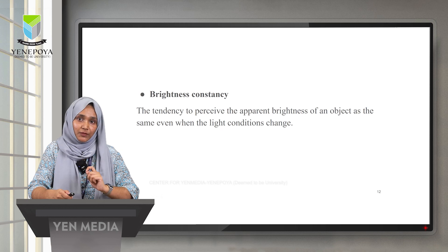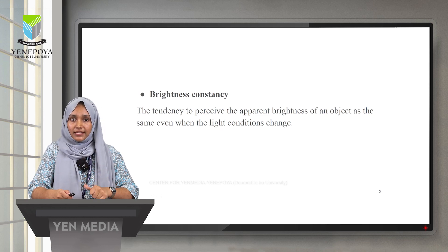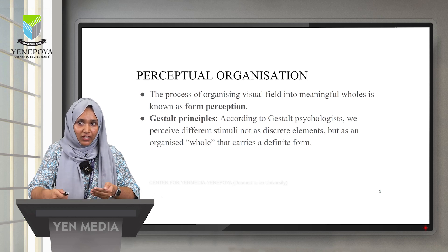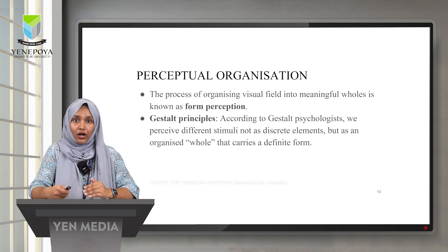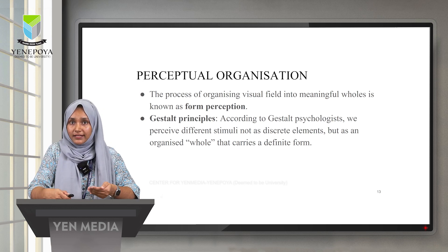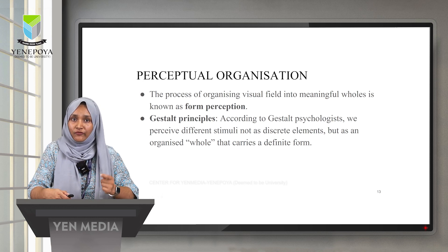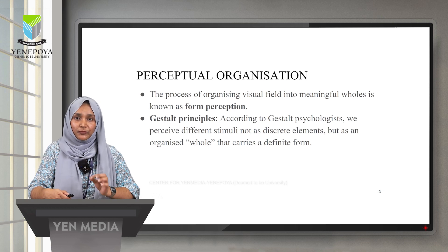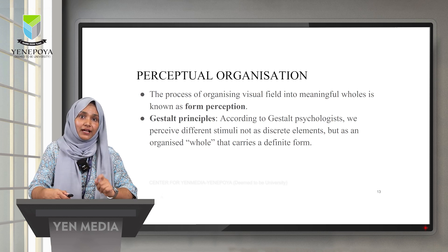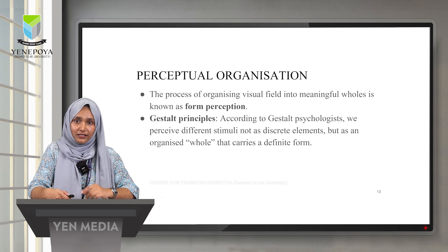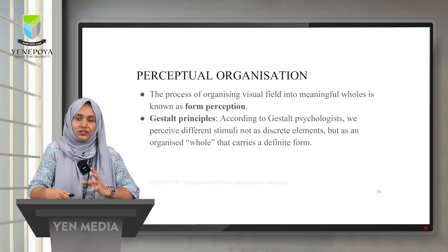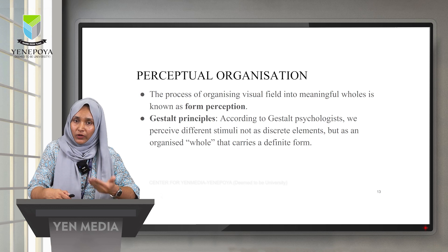So these three are the perceptual constancies: size constancy, shape constancy, and brightness constancy. Next, perceptual organization — we have perceived things, but how do we organize them? The process of organizing the visual field into meaningful wholes is known as form perception, or the Gestalt principle. According to Gestalt psychologists, we perceive different stimuli not as discrete elements but as an organized whole — the whole is different from the sum of its parts.